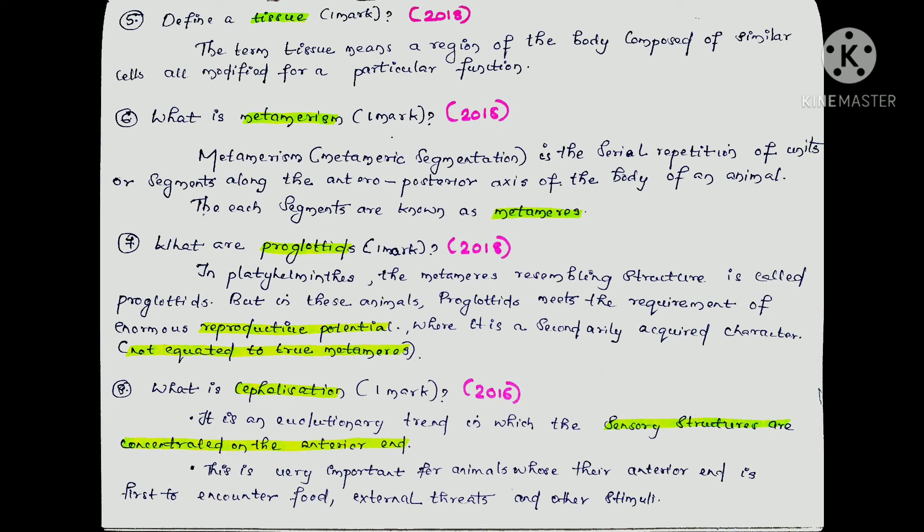What is cephalization? Cephalization is an evolutionary trend in which sensory structures are concentrated at the anterior end of an animal. This is very important for animals whose anterior end is the first to encounter food, external threats, and other stimuli.